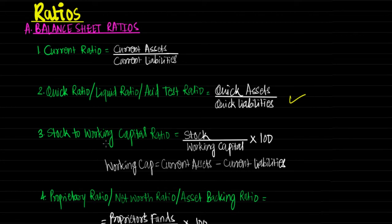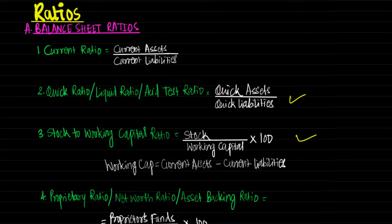Next ratio is stock to working capital ratio, calculated as stock upon working capital into 100. Working capital means current assets minus current liabilities. Here stock means closing stock. The significance is that it shows the quality of working capital and the quantum of stock in it.